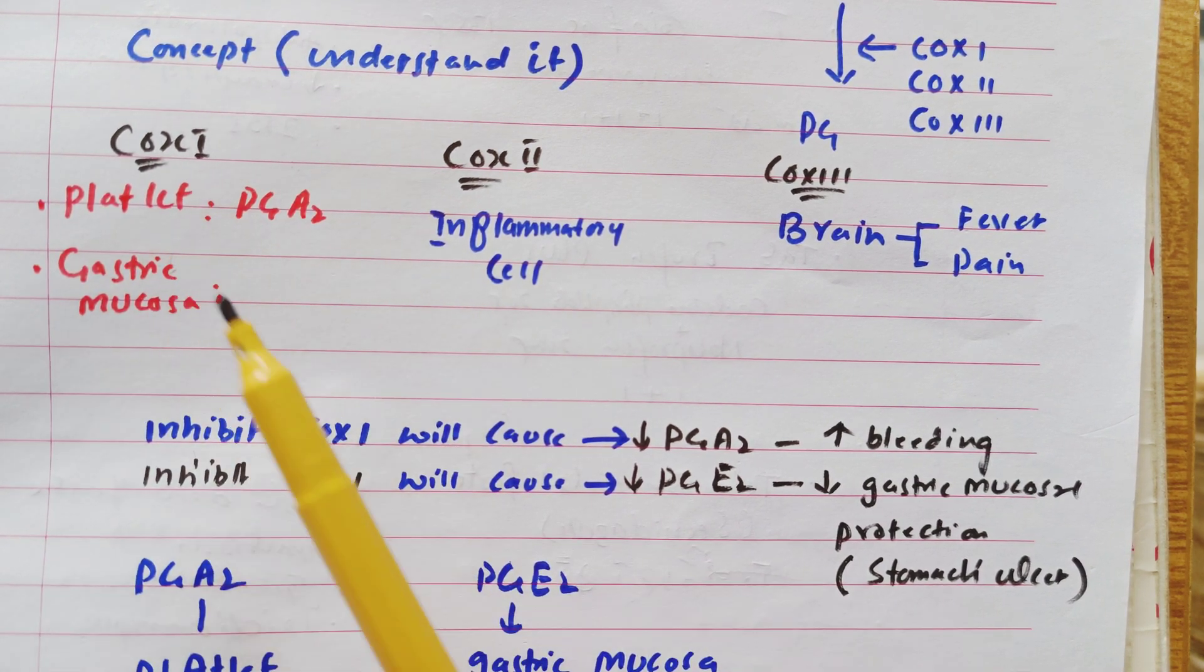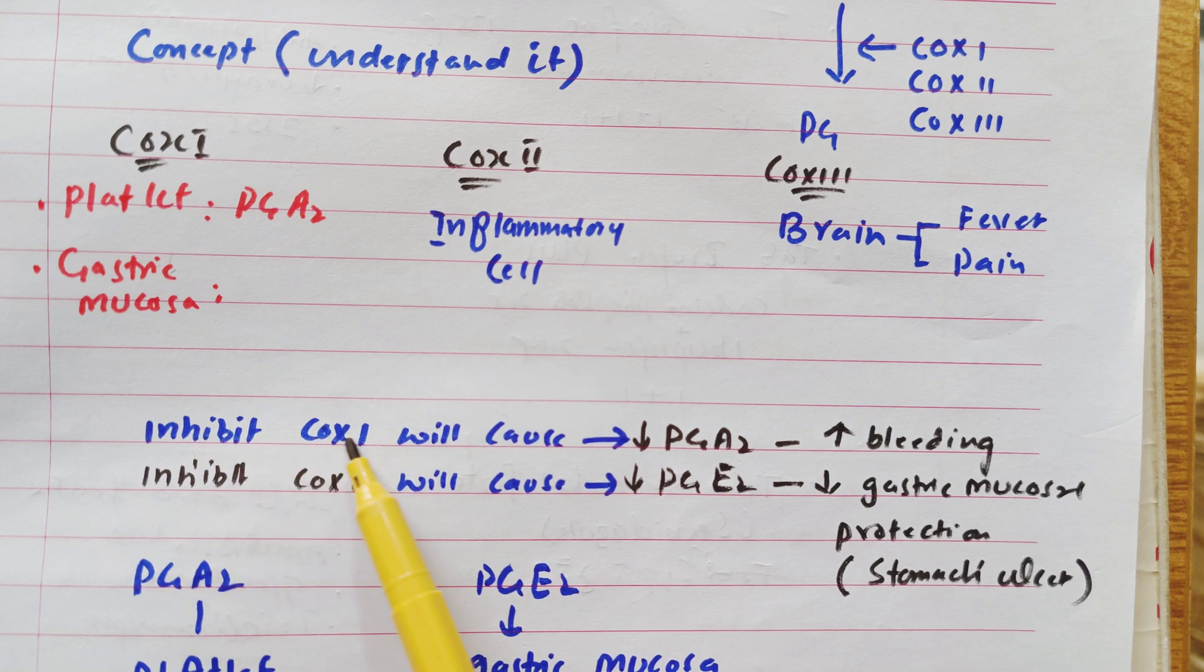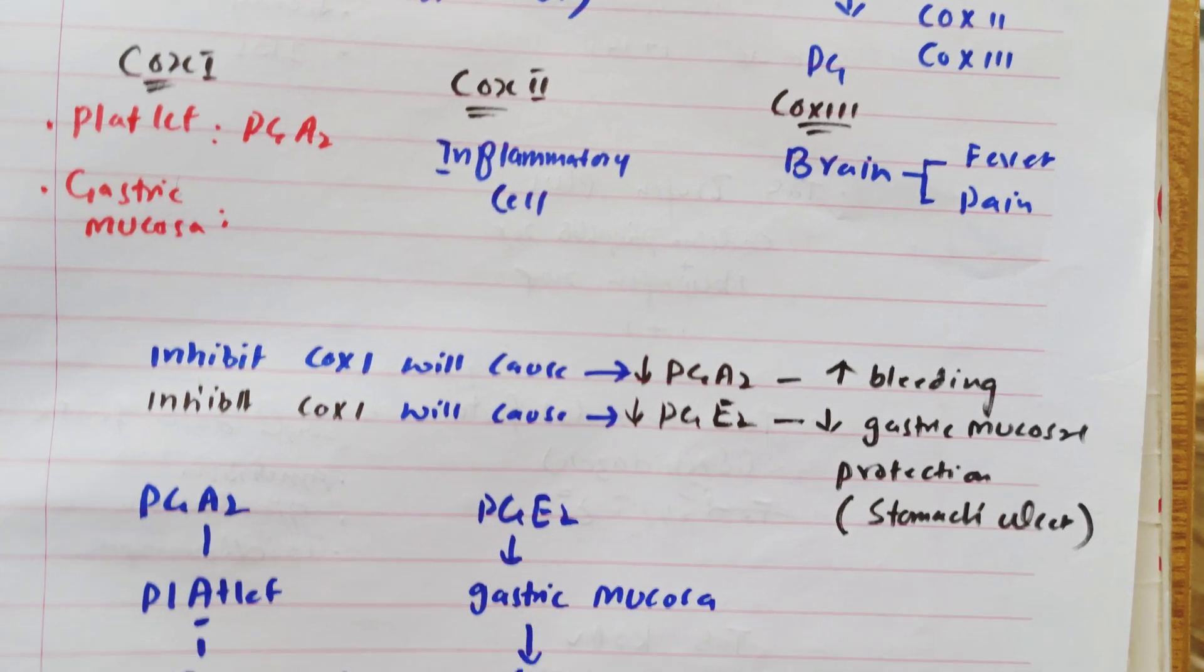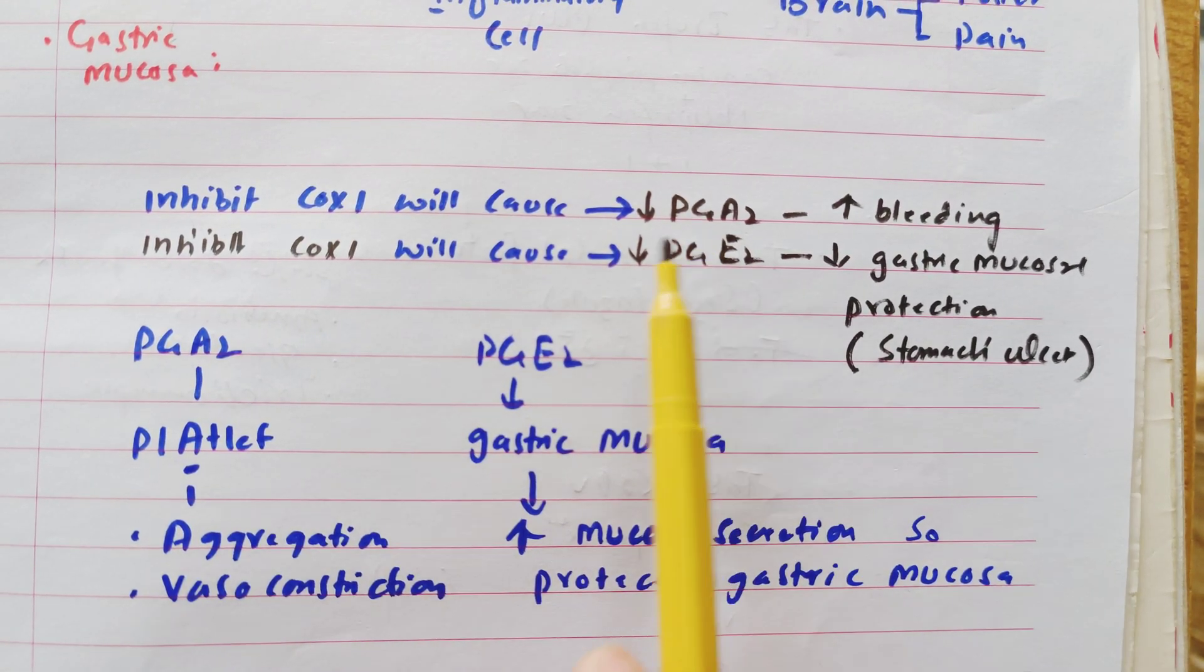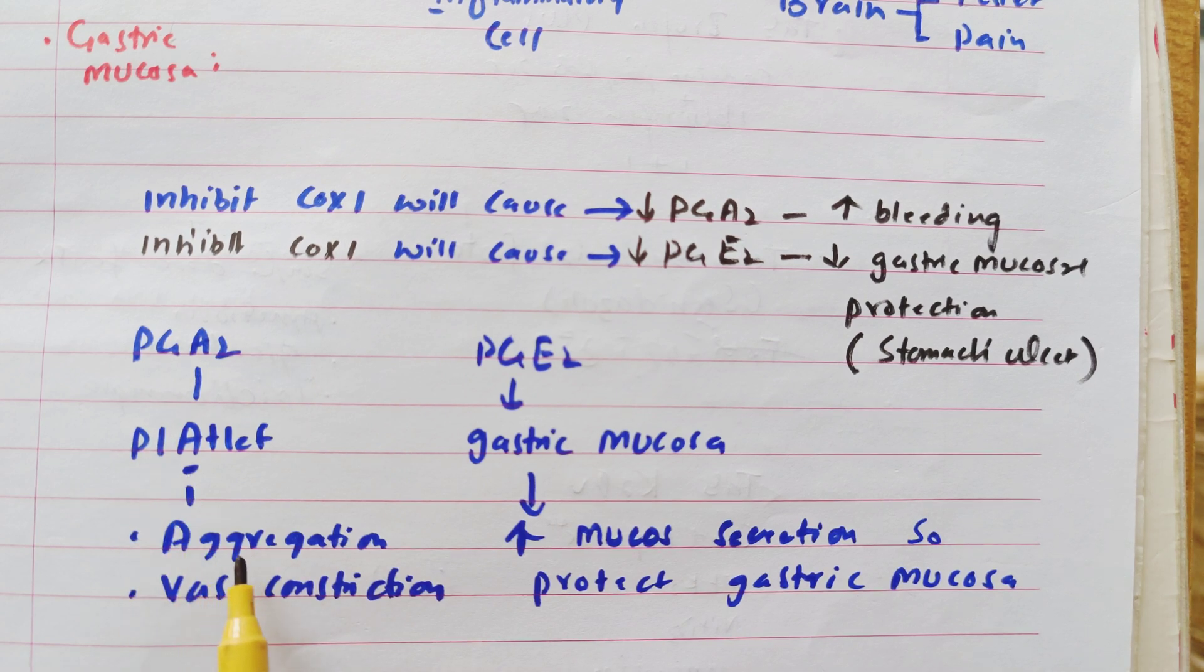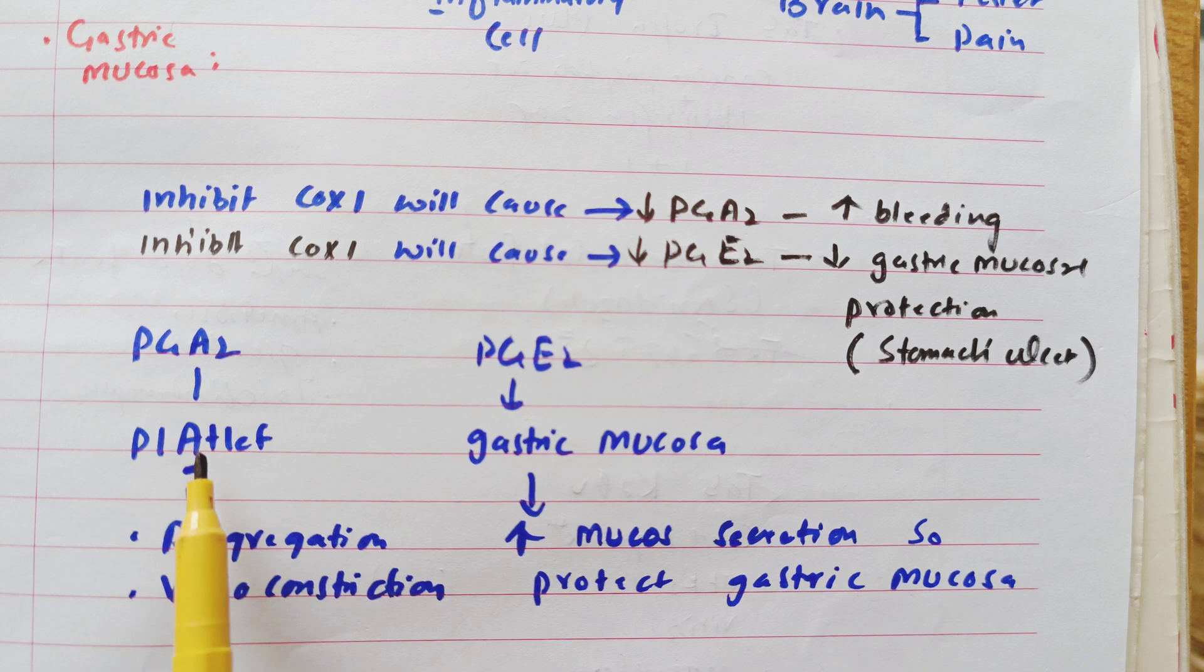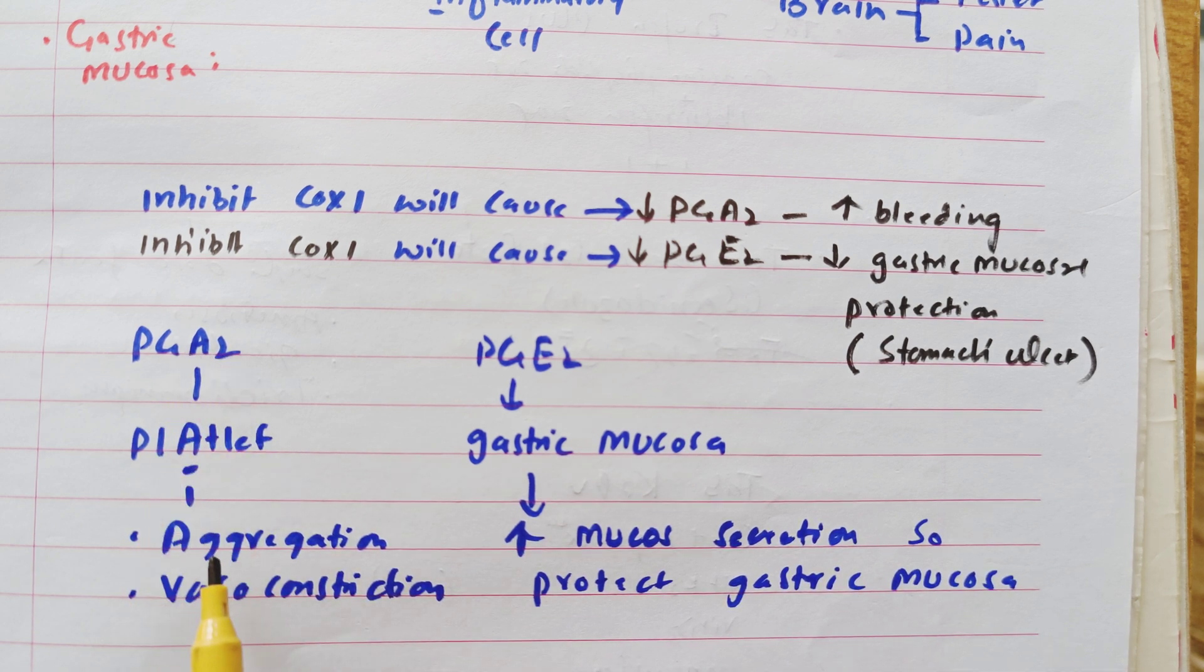If we inhibit this COX-1, so in the platelet, there will be decreased prostaglandin A2 formation, so the chances of bleeding will be increased. Because this prostaglandin A2 is produced by platelet and it helps in platelet aggregation and vasoconstriction. So just see the word A in PGA2 in platelet and aggregation.